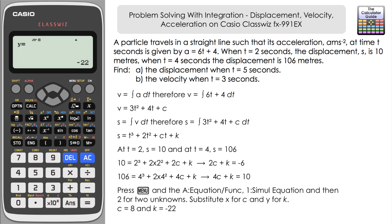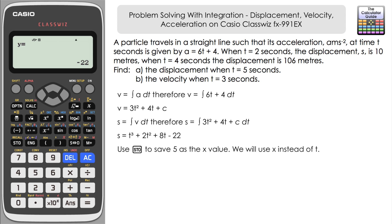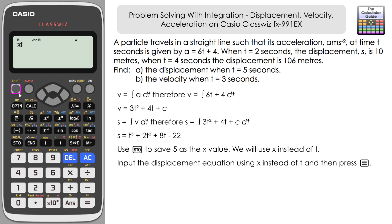We can now complete our equation for displacement: s = t³ + 2t² + 8t - 22. We're in a position to answer part (a): find the displacement when t = 5 seconds. For convenience, I'll store 5 as x and write the equation substituting x for t: x³ + 2x² + 8x - 22. Press equals and the solution is 193 meters. You can of course just input the values directly if you wish — this is just an alternative approach.